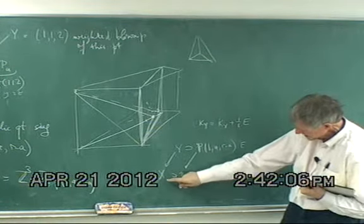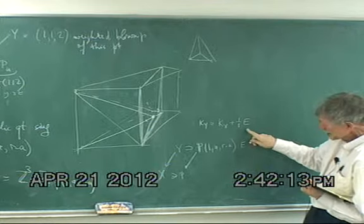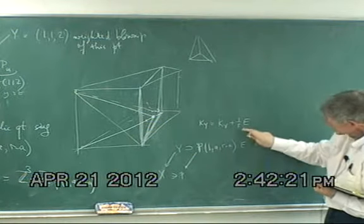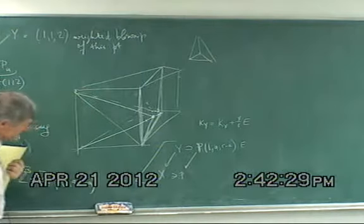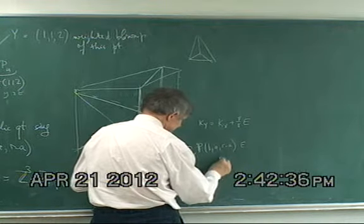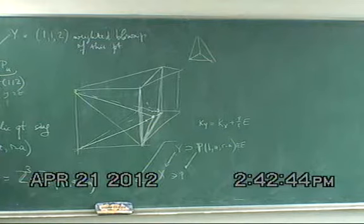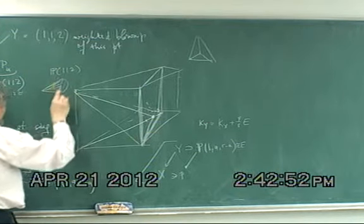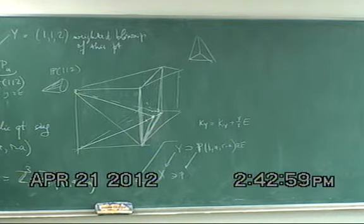This is a terminal quotient singularity. If you resolve it, every exceptional divisor appears with strictly positive discrepancy. This discrepancy is exactly the height of the point above this plane, and so it's the smallest possible value. This E is isomorphic to P(1,1,2), which is the ordinary quadric cone. The point about this is that this exceptional surface has Picard class group 1, which means that Y → X is an extremal contraction in the Mori category.